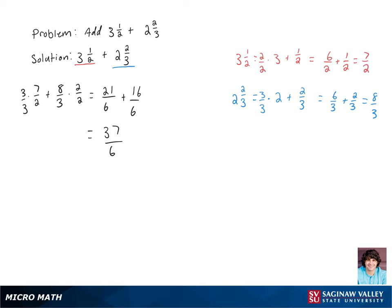Now let's rewrite this as a mixed number. Let's do long division. 37 divided by 6. 6 goes into 37 six times. Multiply our quotient by our divisor, we get 36. Subtract that from 37, we get a remainder of 1. So our final answer is 6 and 1 sixth.